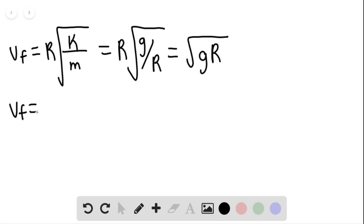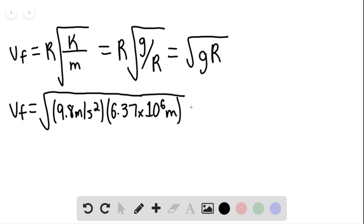So the velocity final would be the square root of 9.8 meters per second squared multiplied by the radius of the earth 6.37 times 10 to the 6th meters. And the final velocity would be 7.9 times 10 to the 3rd meters per second.